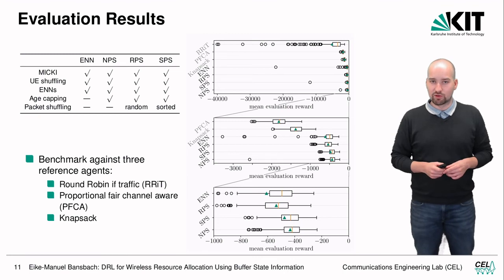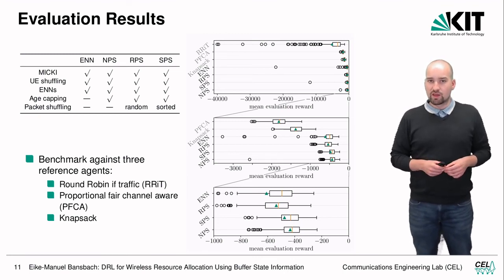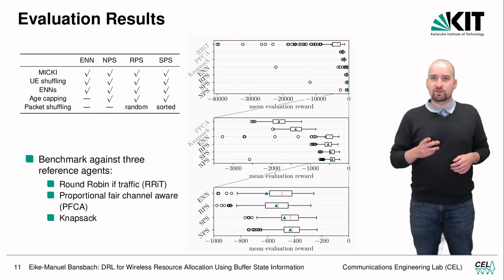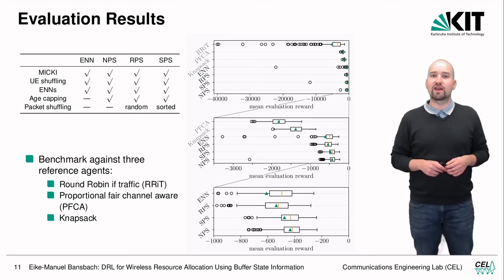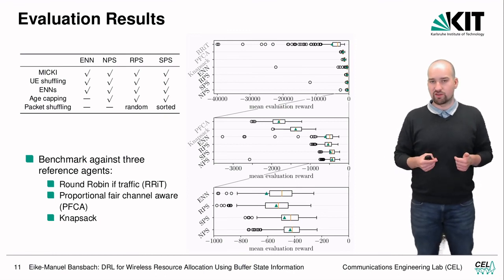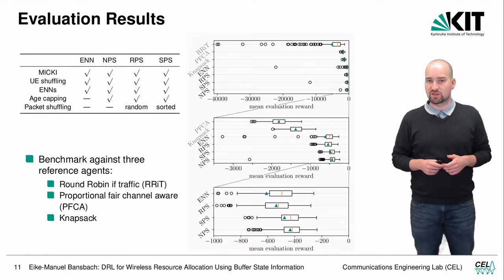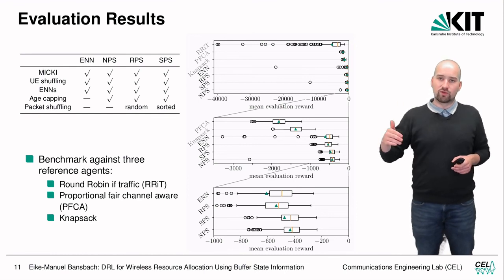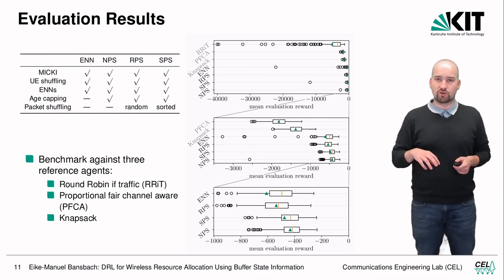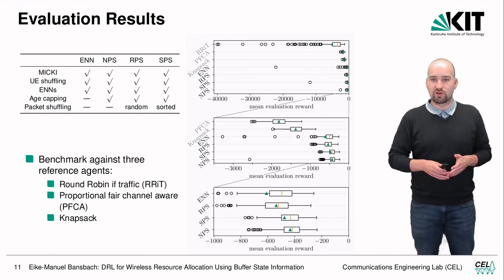Looking more closely at RPS, SPS, and NPS, they perform roughly the same. RPS is slightly worse than SPS and NPS, but is the only agent with no significant outlier. SPS and NPS each have one significant outlier, which we attribute to packets occupying rearmost buffer slots in those evaluation realizations — positions not well covered by their shuffling strategies. We trade slightly lower performance for better generalization with RPS due to its random packet shuffling.